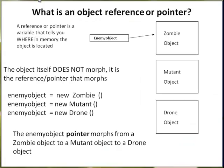What is an object reference or a pointer? It's basically a variable that controls and handles the object — a variable that tells you where in memory the object is located. If I say enemy object equals new zombie, the enemy object variable is pointing to the zombie object, just like you see with the arrow here.